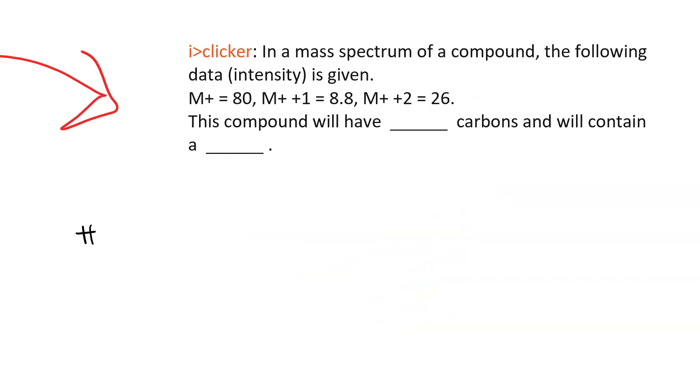So first, let's figure out the number of carbons. That's going to equal the M plus 1 over 0.011 times the molecular ion peak. So that's 8.8 over 0.011 times 80, which gives us 10 carbons.